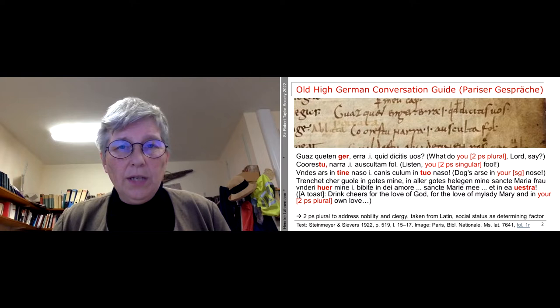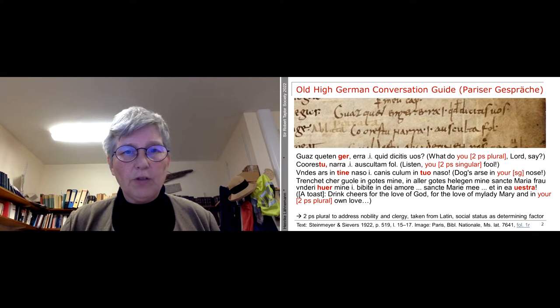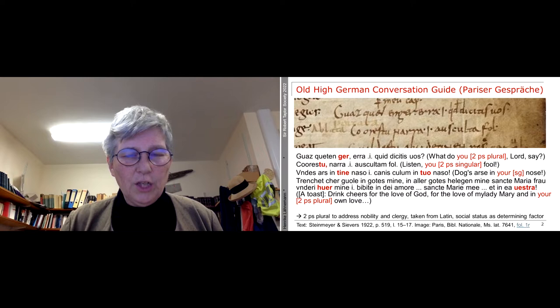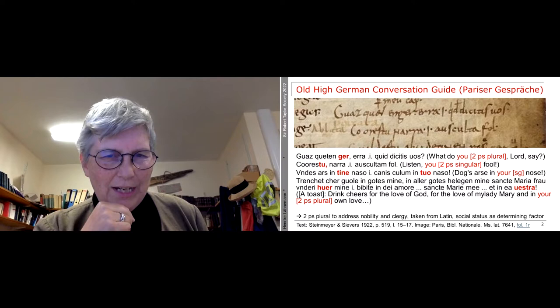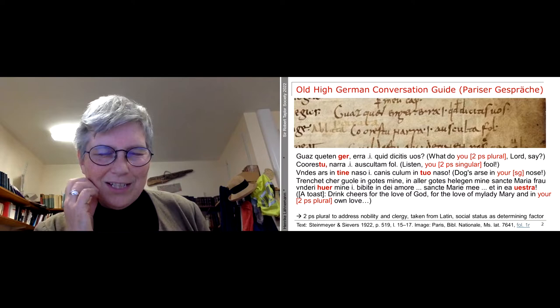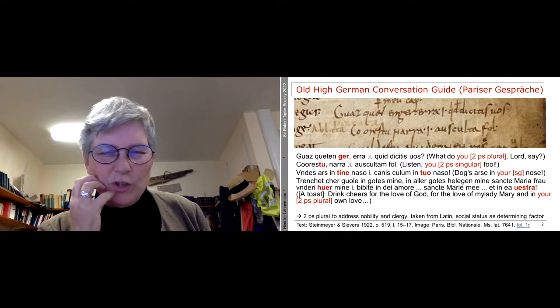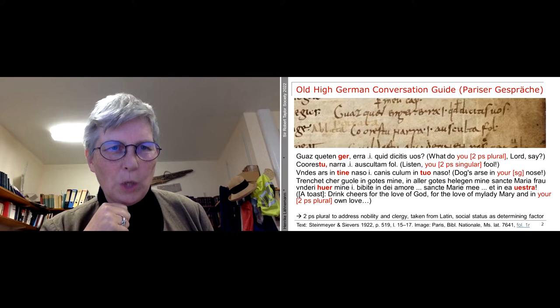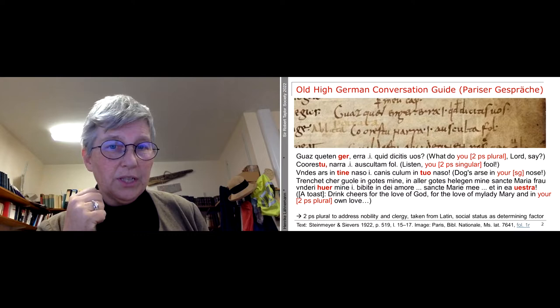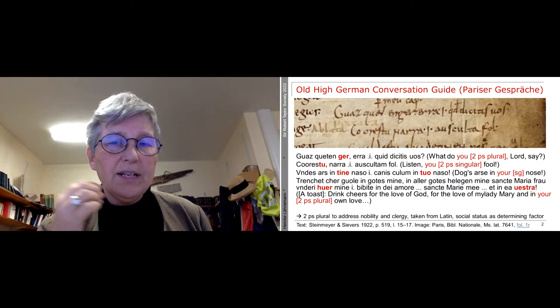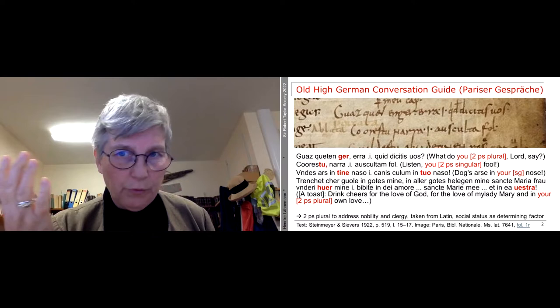So we have right from the start of German literature different levels of address. This is a 9th century conversation guide to German, written down by a French language speaker who noted the Latin equivalents. The first conversational phrase noted was: 'Waz quittent hier, Herr' — 'what do you, Lord, say?' Here, 'hier' is the second person plural.